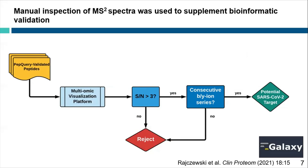The second workflow also generates MS2 spectra that can be examined using the Lorikeet tool in the Multi-Omic Visualization Platform so that we could examine the quality of the spectra of peptides that pass through PEP query. Our rules for selecting good spectra are based on getting the highest quality matches possible. The product ions must be at least three times as intense as the noise signal, and there must be at least three consecutive ions in the B or Y ion series, or ions corresponding to the fragmentation of the peptide backbone.